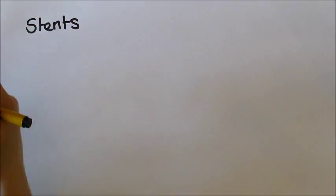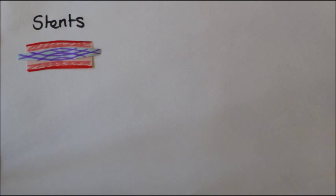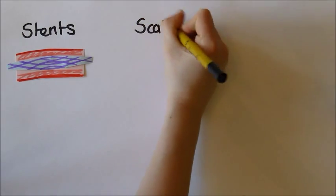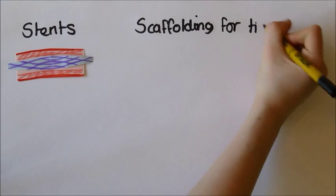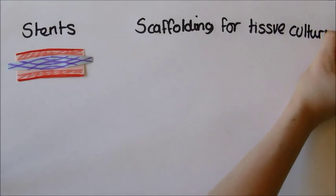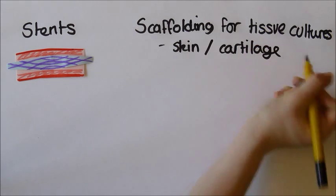The metallic mesh is placed inside the artery and expands, widening the artery where the atheroma was. Thin layers of plastic can be used as scaffolding for tissue culture. Layers of skin and cartilage can be grown on these and used later for reconstructive treatments.